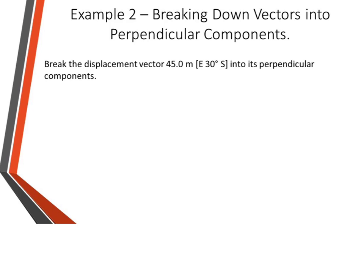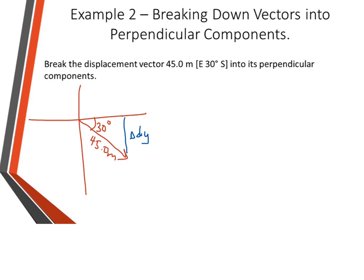So again, always a good idea to start with a diagram. So we are going to be east, and then we're going 30 degrees south — so our vector is here. Again, it does not have to be to scale. We're just going to add our information in. So we're going to say that this is our delta dy — our blue will be delta dy — and our green will be our delta dx.